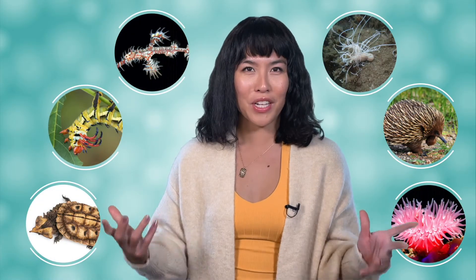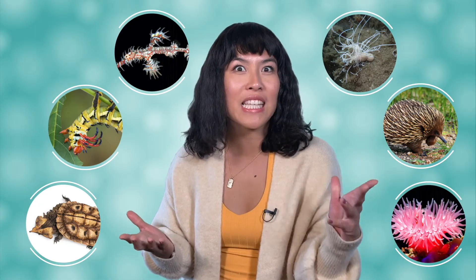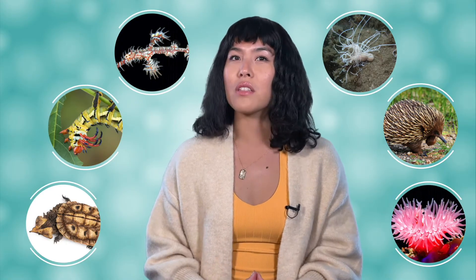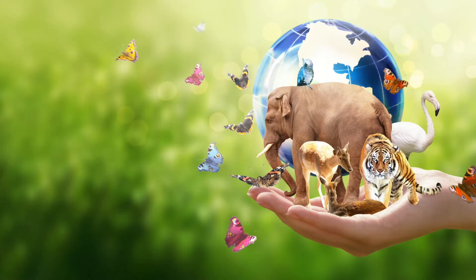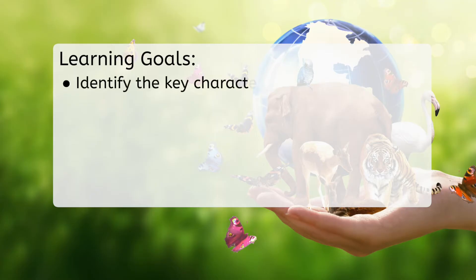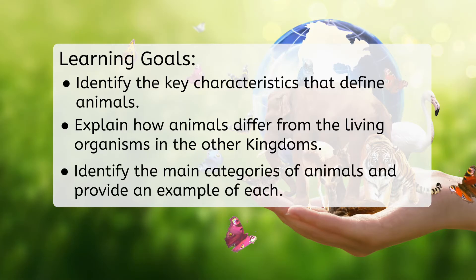Through the next seven lessons, you will learn about a wide, exciting range of animals, from those you are familiar with to those that you may have never seen before, including animals that don't even look like animals, like some of these fun, unique and interesting organisms. But before we get started, let's look at our goals for this lesson. By the end, you'll be able to identify the key characteristics that define animals, explain how animals differ from the living organisms in the other kingdoms, identify the main categories of animals, and provide an example of each.